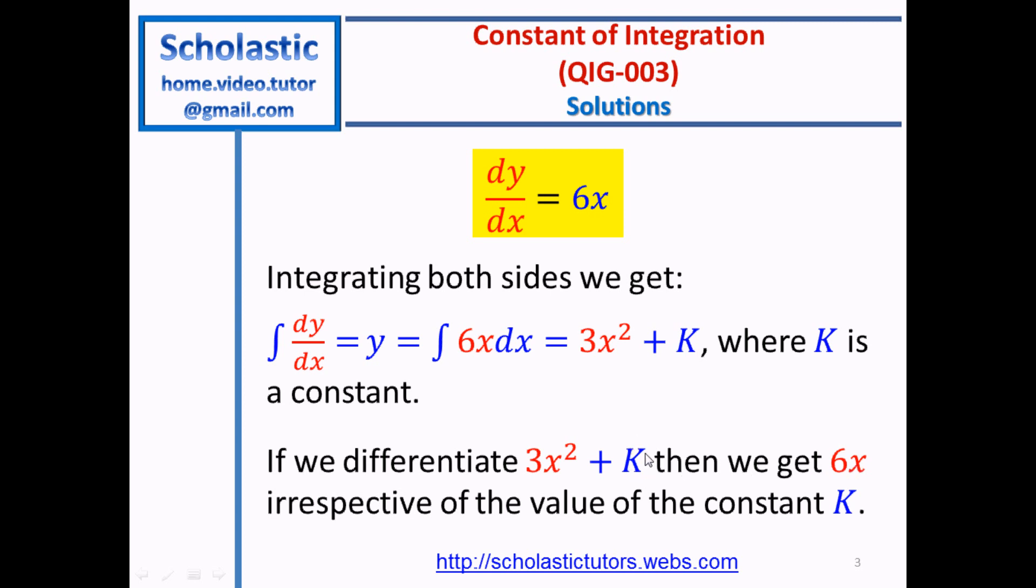So constant K, if you differentiate, becomes 0. Therefore, if you differentiate 3x squared plus K, then we get 6x irrespective of the value of the constant K. So K can be any value.